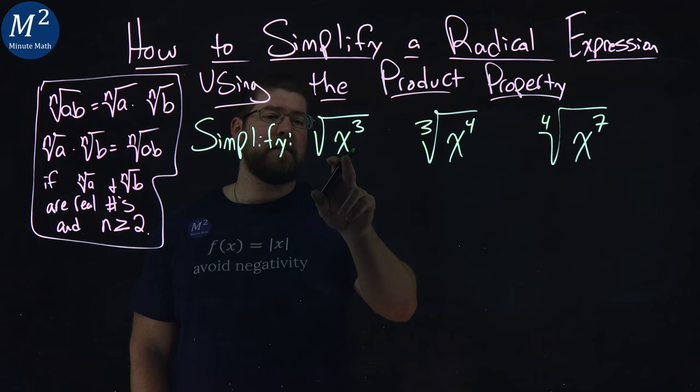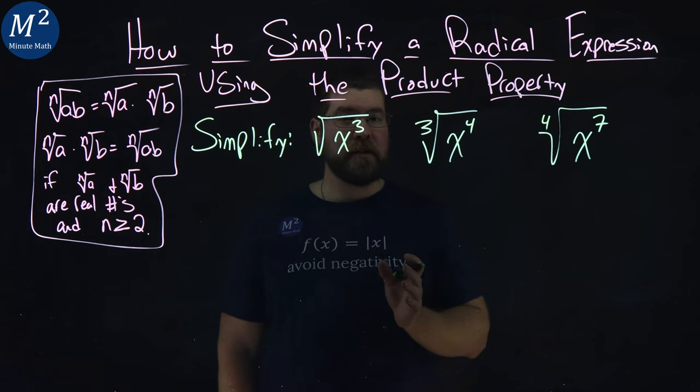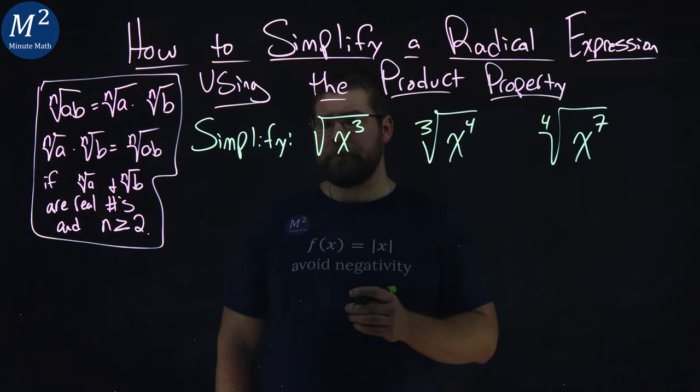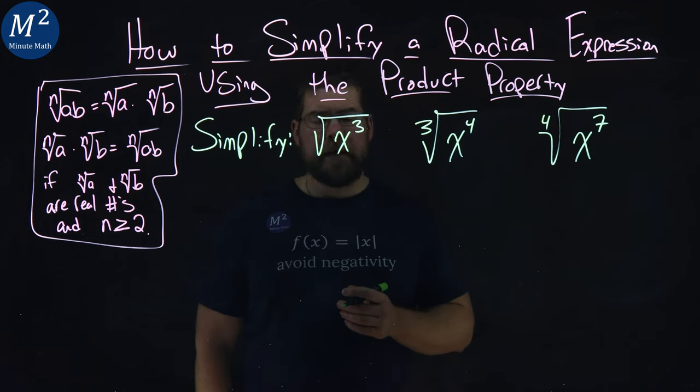Again, product property states basically that we can separate the inside into multiplication, and then break that apart from two different square roots that are multiplied. So let's look at our first one here.